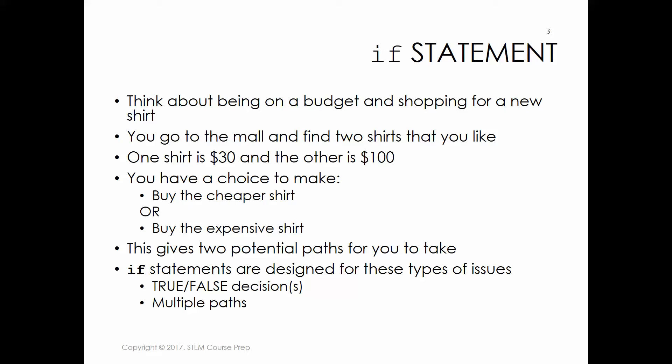If you buy the cheaper shirt, you only spend $30 and you might have a little extra money to buy something else that month. If you buy the expensive shirt for $100, you're not going to have any extra money for the month, so you'll probably have to make some changes until you get paid again. You've got two different paths to take. If statements are designed for those kinds of situations where you have multiple paths you can take, and you've got a true-false decision — kind of like a yes or no decision.